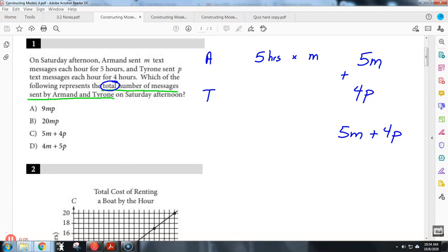Now if you wanted to, you could actually pick an M and a P just to make sure. You could say, hey, Armand sent maybe ten messages for five hours. Every hour he sent ten, so that would be 50. And then maybe Tyrone did five messages every single hour. So you could do like four times five and get 20, add those together. And then you could go back and plug in the ten and the five in for the other two if that helped you.